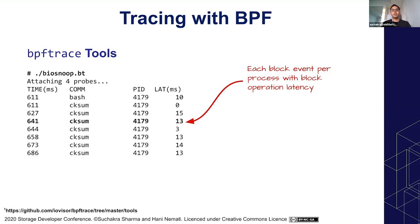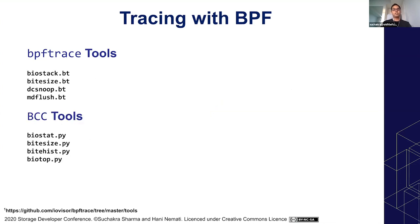Another tool is block IO snoop, which traces all block trace events and shows latency for each command — for example, showing latency for each block event while a process like Jackson is running. There are many other BPFtrace tools and some BCC tools, which are written in a mix of Python and C. We'll come back to these because our tool — the one we'll be building towards the end of the talk — is very much like this.